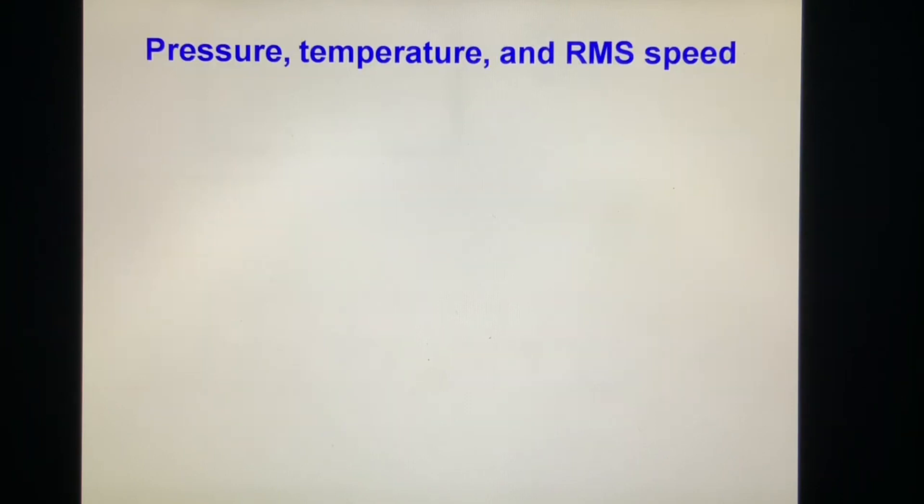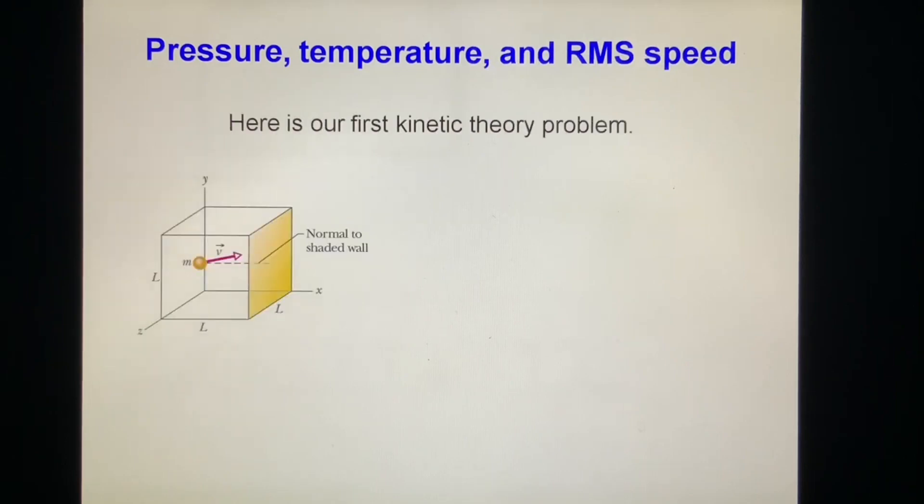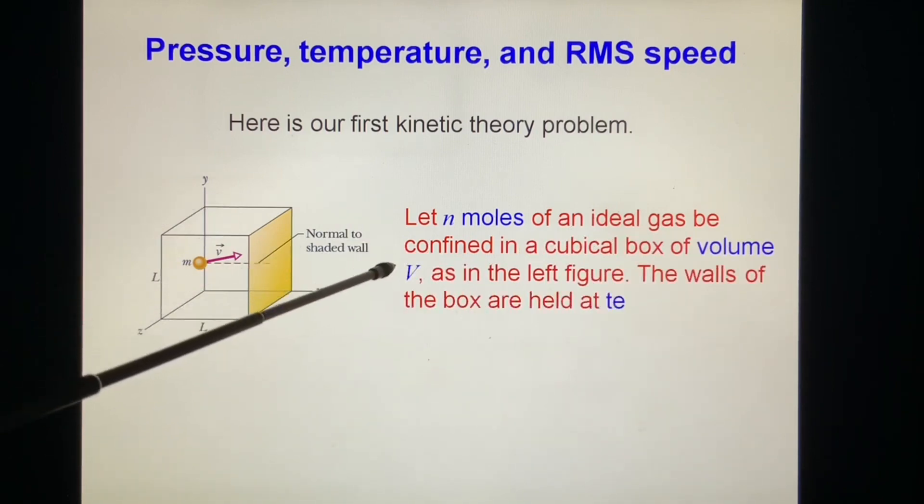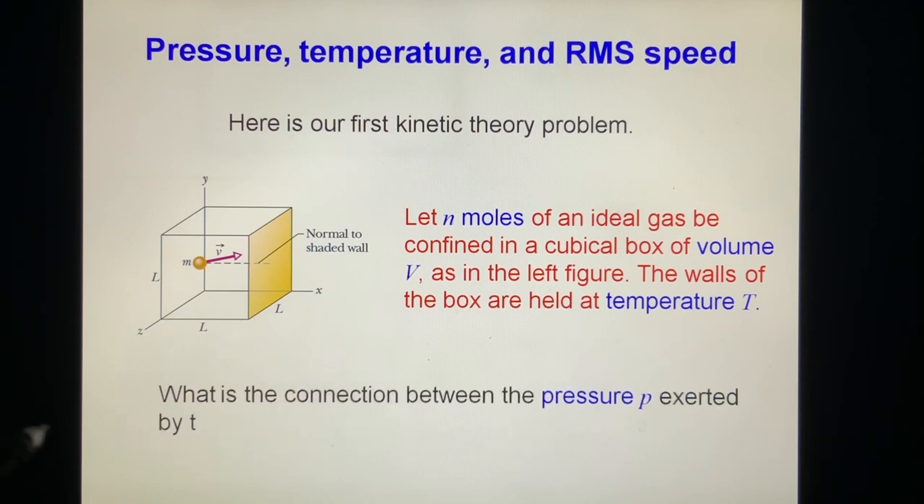Pressure, temperature, and the root mean square speed. Here is our first kinetic theory problem. We have a box with six surfaces, a shaded wall. This box is in the shape of a cubical box. Inside, we have N number of molecules. Let n moles of an ideal gas be confined in a cubical box of volume V. The length is L, V equals L cubed. The walls of the box are held at temperature T, so temperature is constant at T. What is the connection between the pressure P exerted by the gas on the walls and the speed of the molecules?